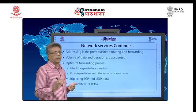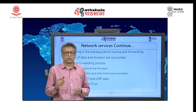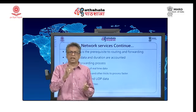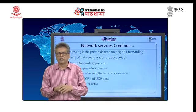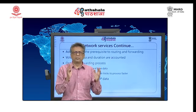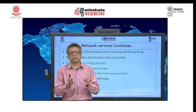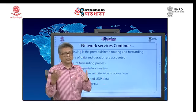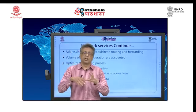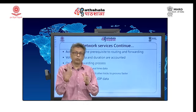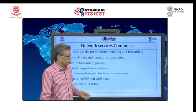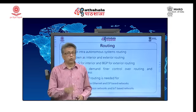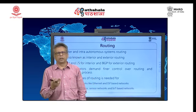Optimized forwarding is also very critical because you have to do the job in real time — forwarding has to happen as fast as it can. If packets are flowing at say 50 GB per second, the router should be able to process 50 GB per second or more. It has to do many other things as well. You also have to multiplex TCP, UDP, and sometimes SCTP.